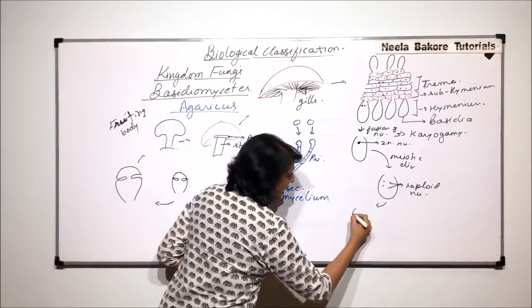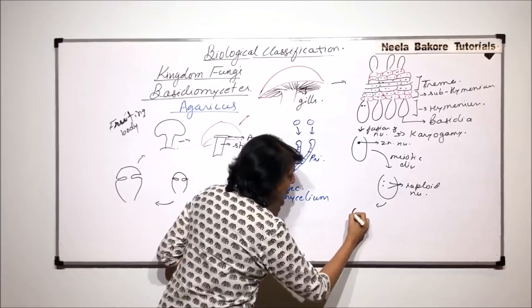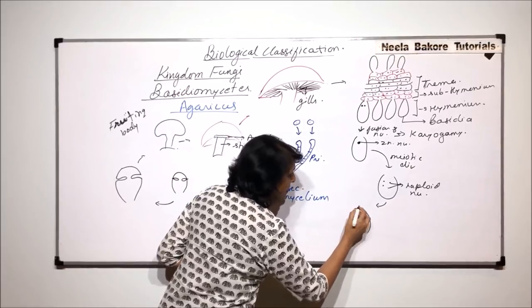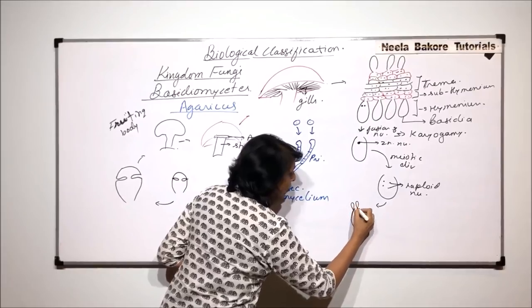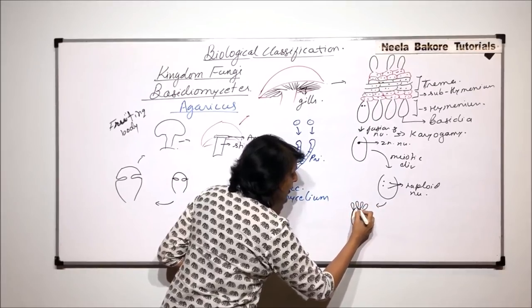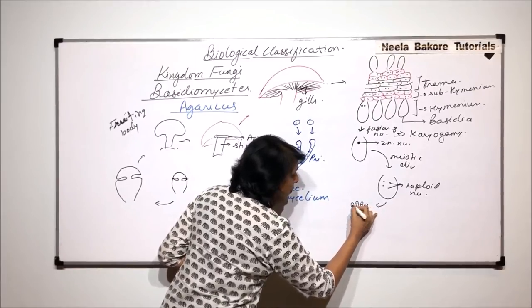All these nuclei, they migrate towards the tip of this baesidium and form four baesidiospores.